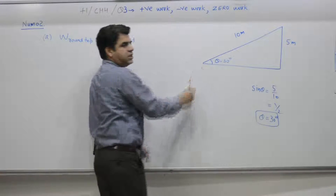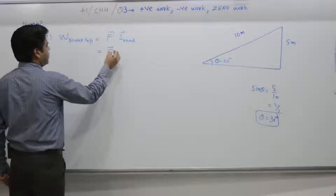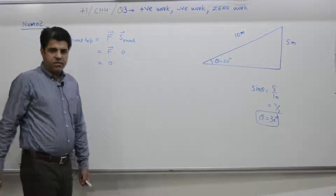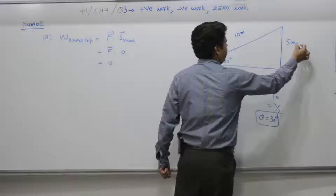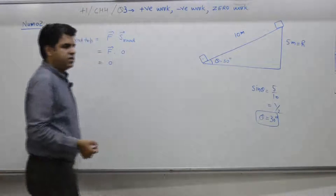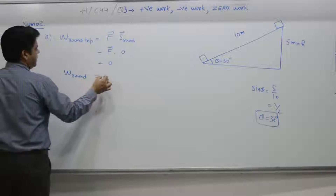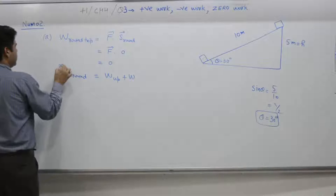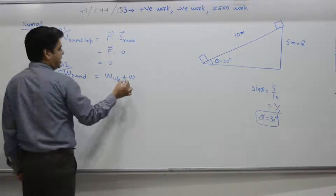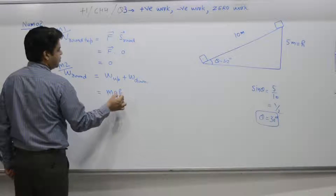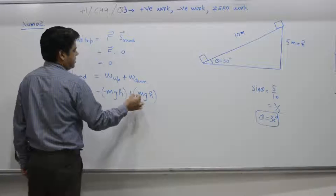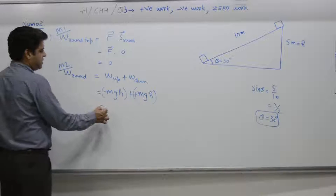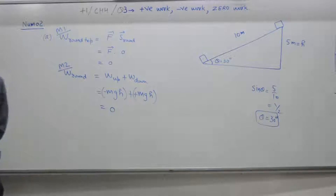Part a: work done in the round trip. In a round trip you start from the bottom, move to the top, then come back — what is the net displacement? Zero. Method two: the object moves up gaining height h, then comes back down. Work done by gravity on the upward journey plus work done by gravity on the downward journey — if one is minus mgh, the other is plus mgh, so the total answer is zero.